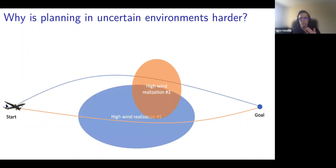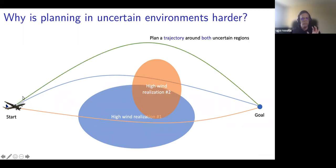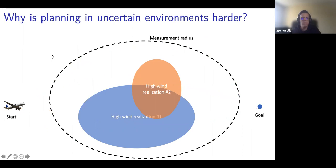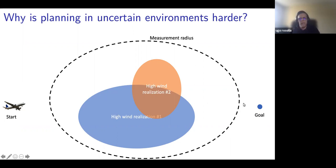When we have multiple obstacles, we should plan a trajectory that goes around both. However, the control problem becomes challenging when we have measurements from the environment. If when we start our route we don't know which of the two obstacles will be present while flying to our destination, we have this ellipse denoted with a black dashed line — when we enter this ellipse we get a perfect observation about which of the two obstacles is actually on our way.